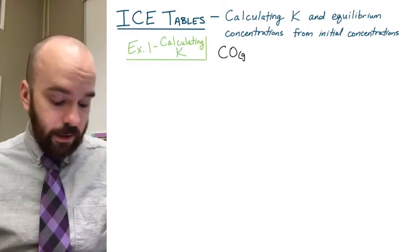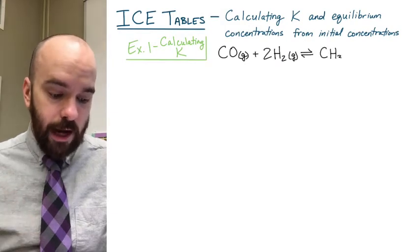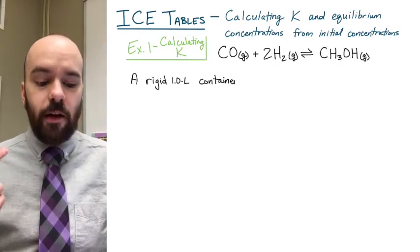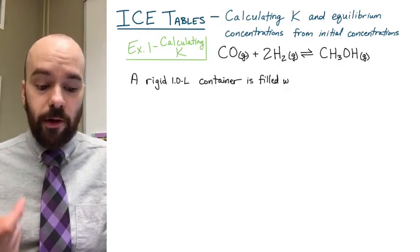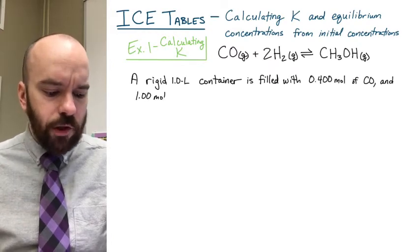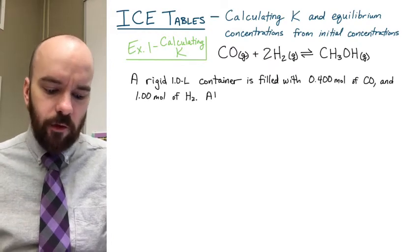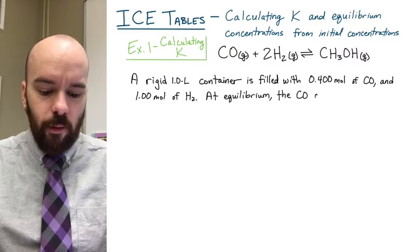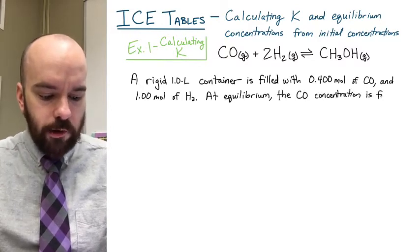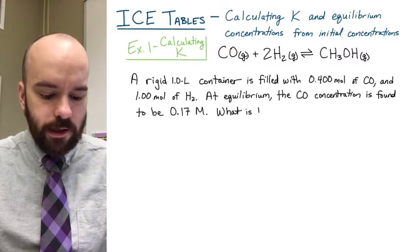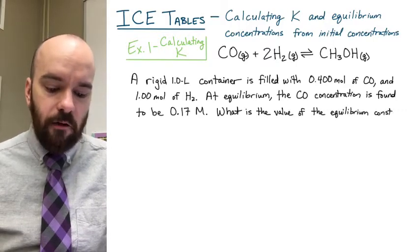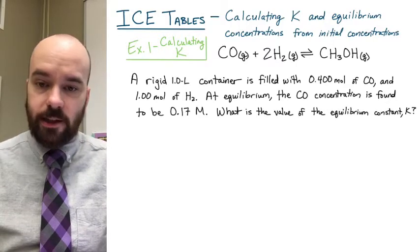In this first example, we're calculating K. Here's our reaction: carbon monoxide gas plus two hydrogen gas in equilibrium with one methanol gas molecule. We have a rigid one-liter container filled with 0.4 moles of carbon monoxide and one mole of hydrogen gas. At equilibrium, the carbon monoxide concentration is found to be 0.17 molar. What is the value of the equilibrium constant K?